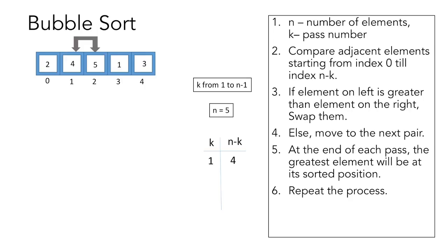We move on to the next pair of elements, and now 5 is greater than 1, so we will swap them — 1 will now be at index 2 and 5 at index 3. Moving on to the last pair, 5 is greater than 3, so we swap them — 3 will now be at index 3 and 5 at index 4. We have completed our first pass, at the end of which element 5 is at its sorted position at the end of the array, as it is the greatest element.